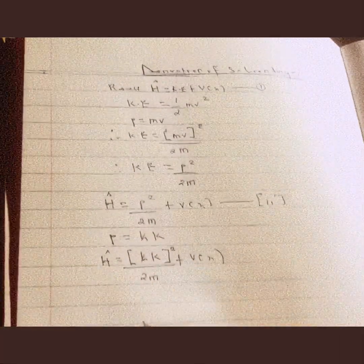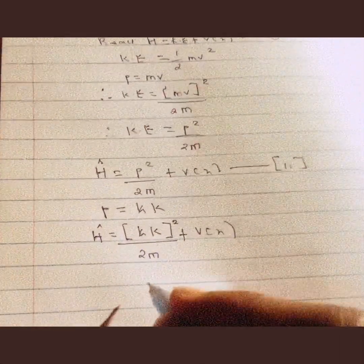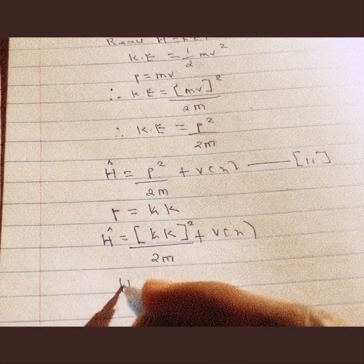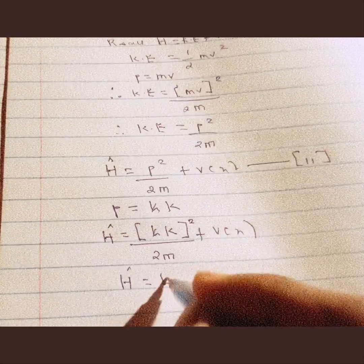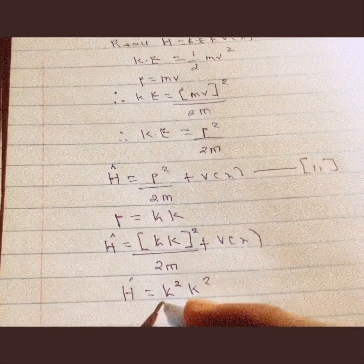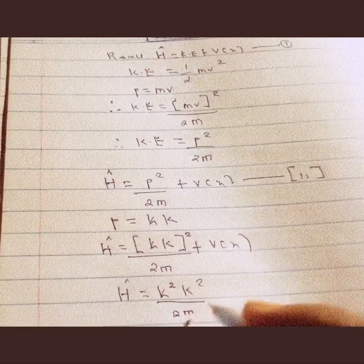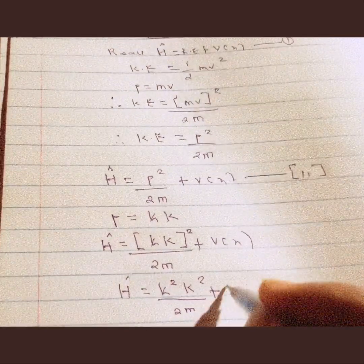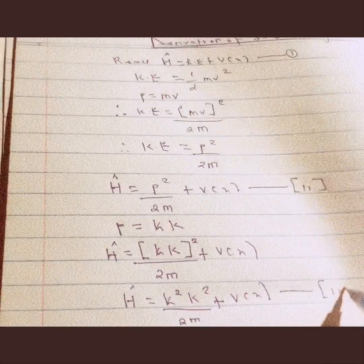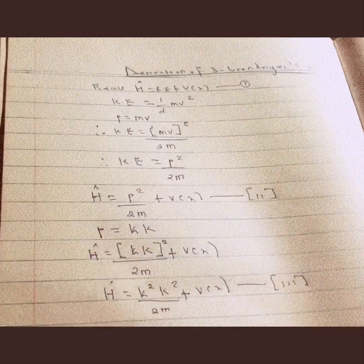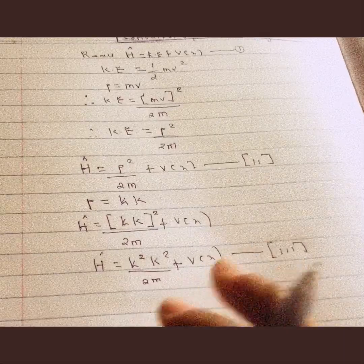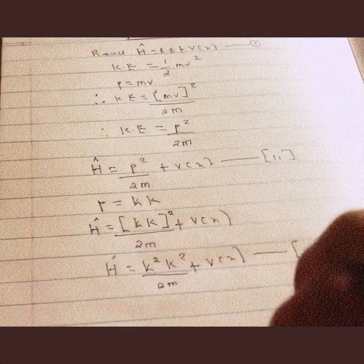Therefore, we can rewrite equation 2 — the Hamiltonian — as equal to ℏ times the wave number k, squared, over 2m, plus the potential energy V. This simplifies to: H = ℏ²k²/2m + V(x). This equation describes the wave property of an electron or a microscopic object.